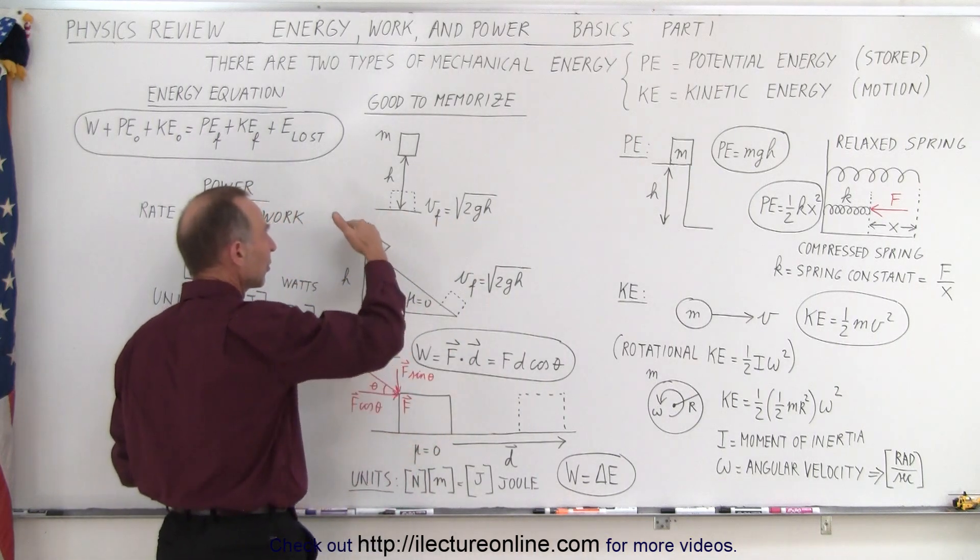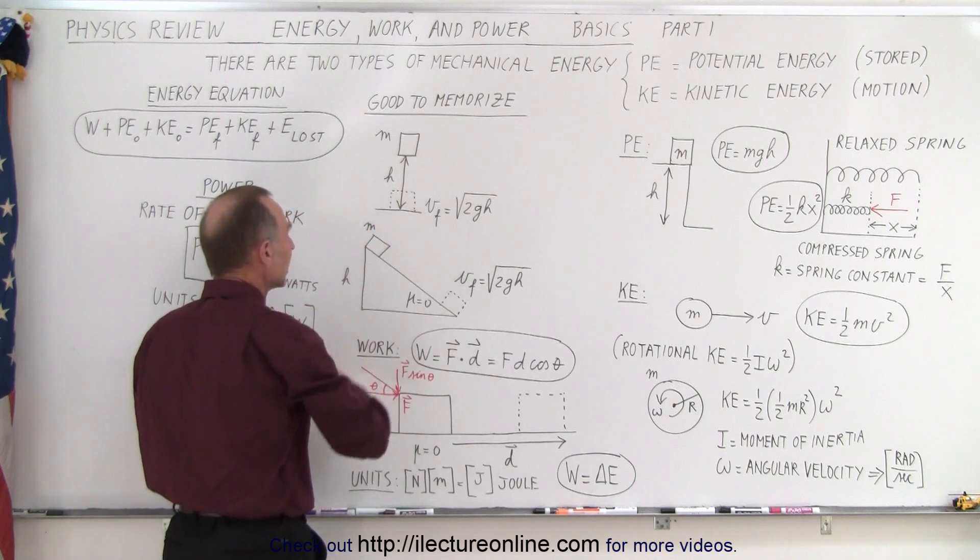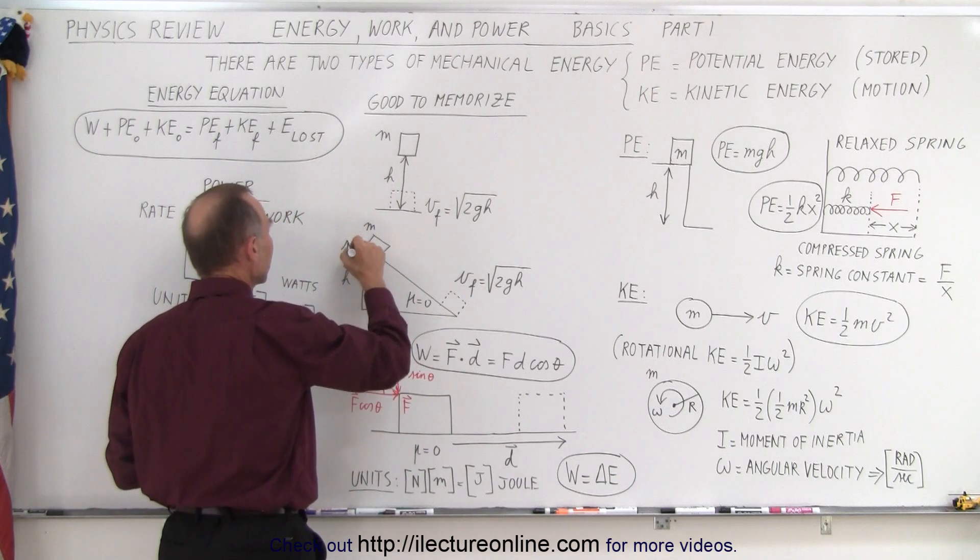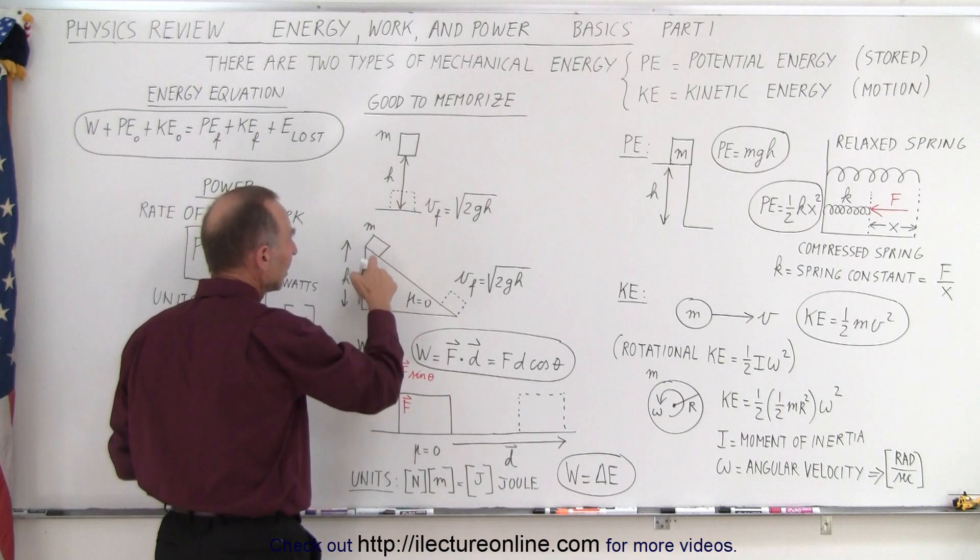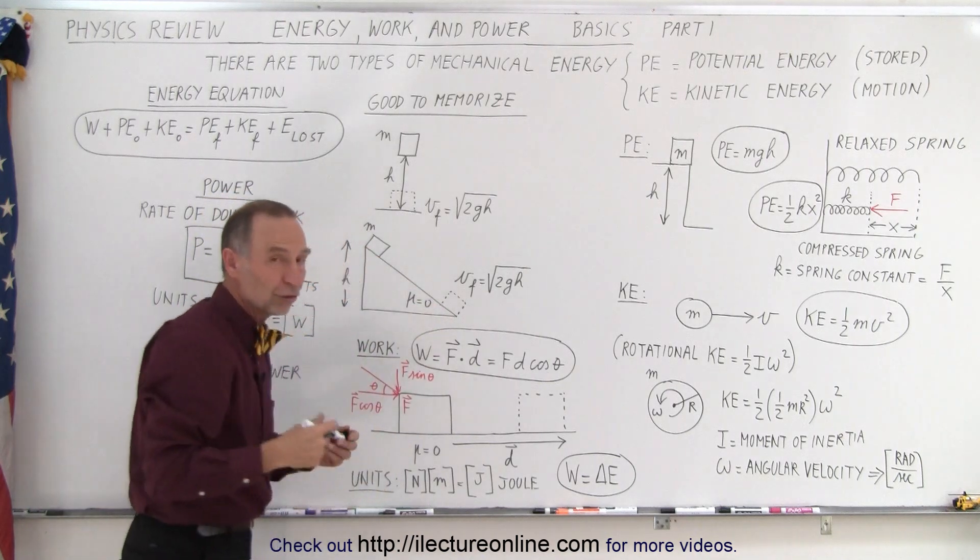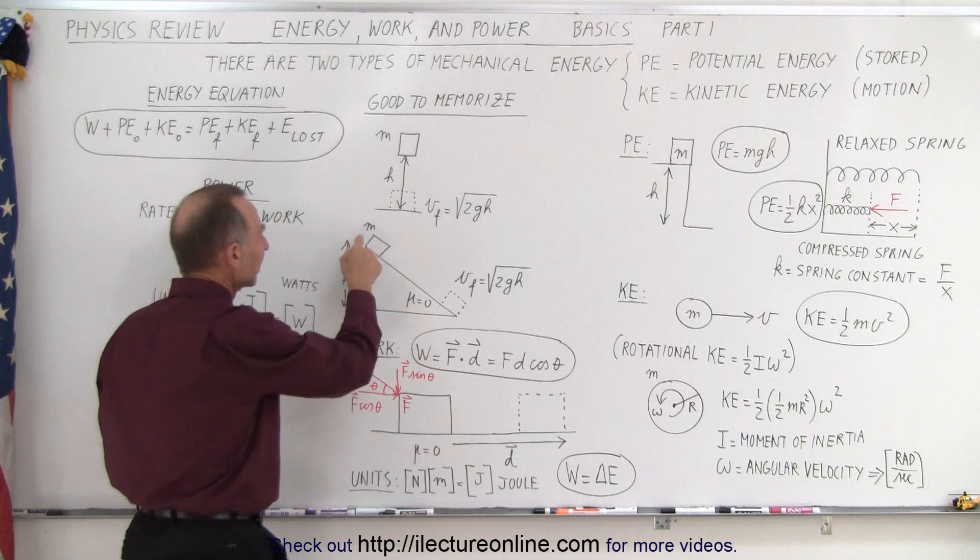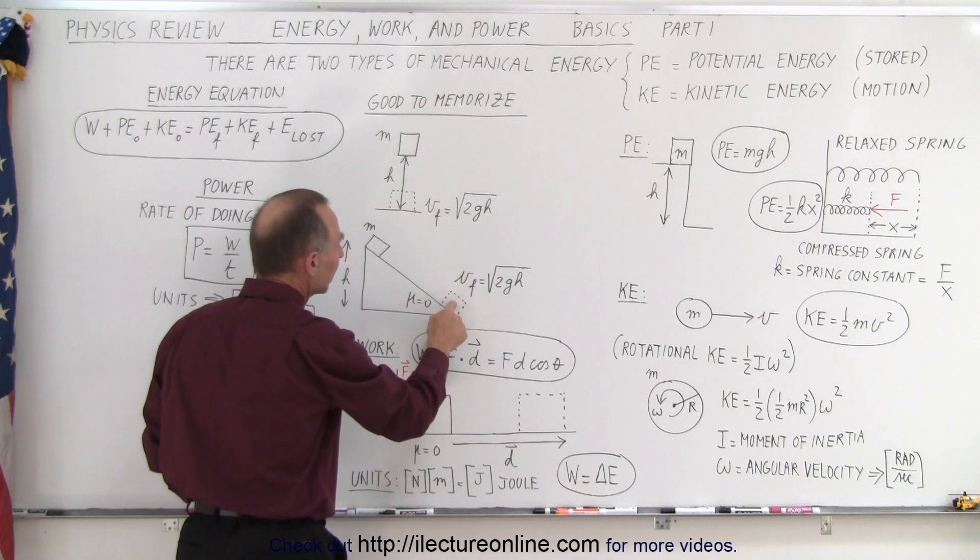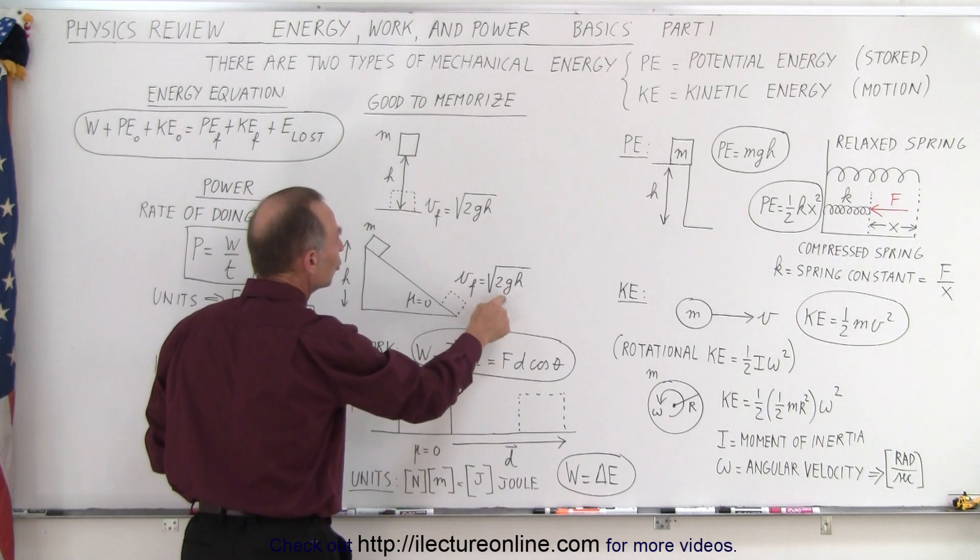The same thing would happen if you allow something to slide down from an incline, if it starts at an initial height equal to h, and let's say there's no friction, so there's no energy loss due to friction, then you could say by the time it slides to the bottom, the speed at the bottom will be the square root of 2gh.